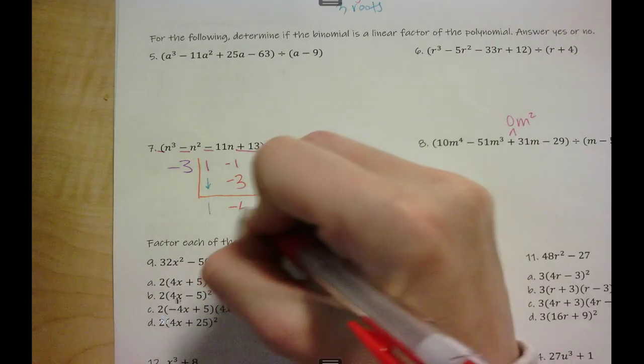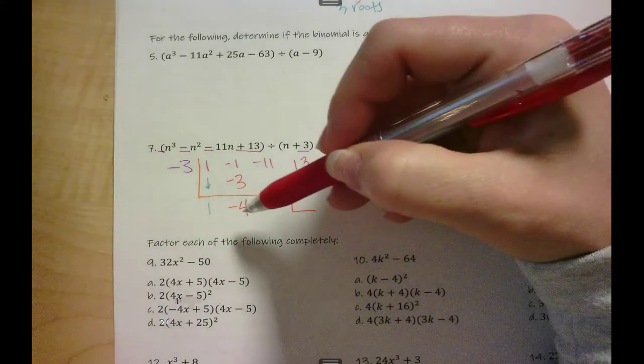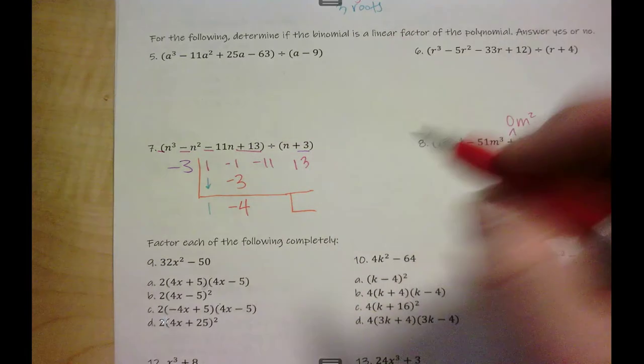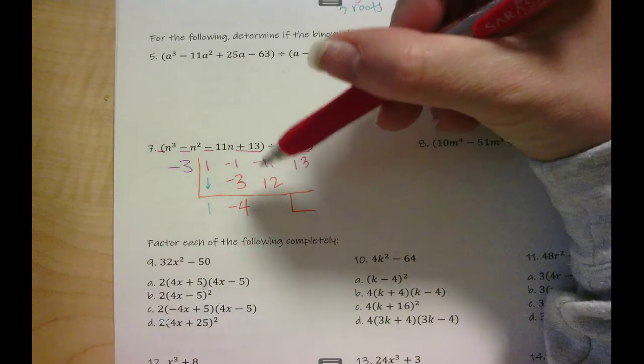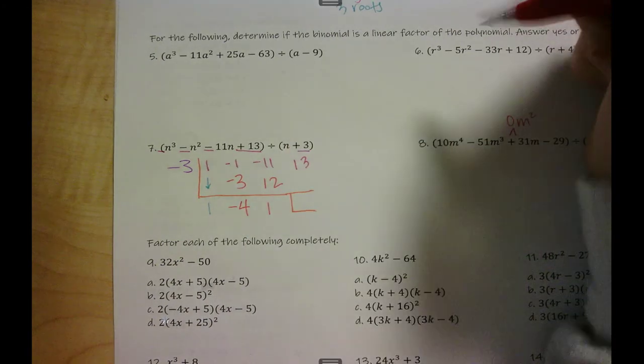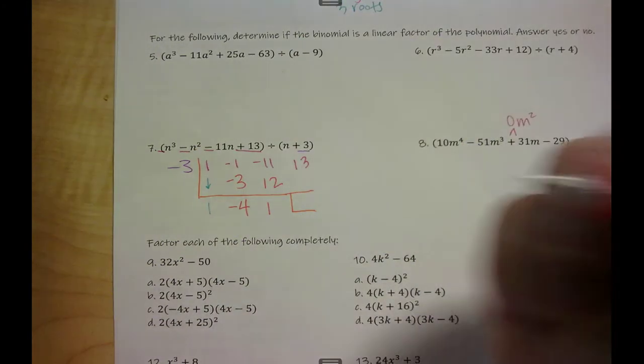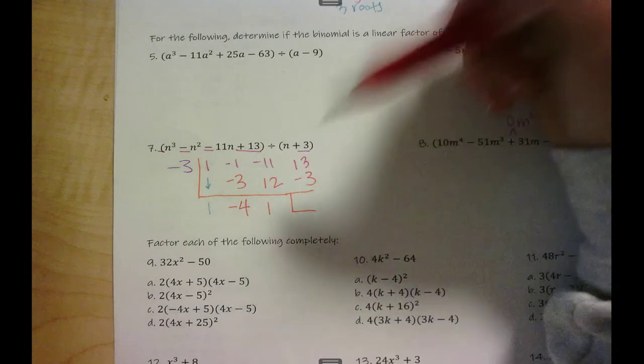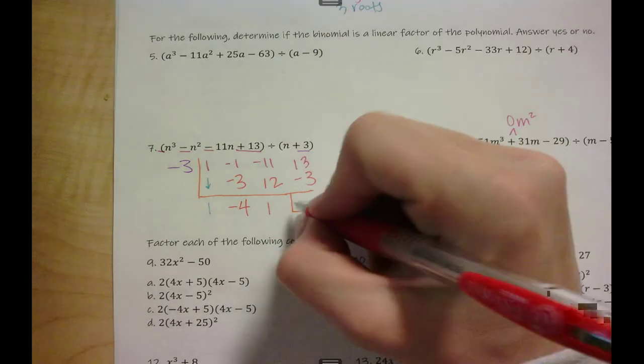Negative gets bigger so it's negative four. Negative four times negative three is positive twelve. Negative eleven plus twelve, positive one. One times negative three is negative three. Thirteen minus three is ten.